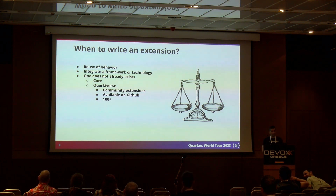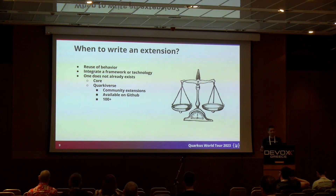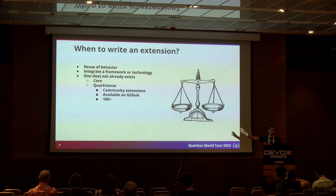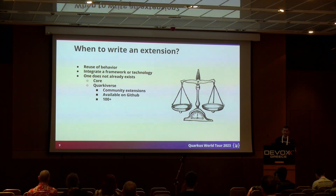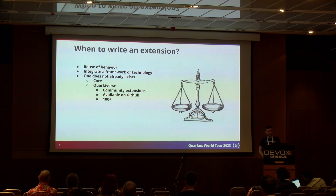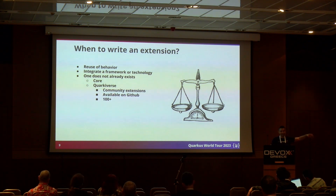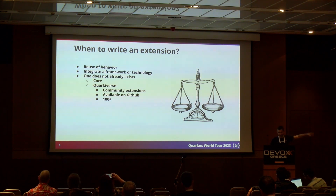Case number two: when I want to integrate a new framework or technology. Case number three: when I want to perform some sort of optimization and move things from runtime to build time. You should always make sure that the functionality you want to implement is not already covered either by Quarkus Core or by Quarkiverse — a collection of community-driven extensions for Quarkus available on GitHub that currently has tons of extensions. So make sure you check those places first.